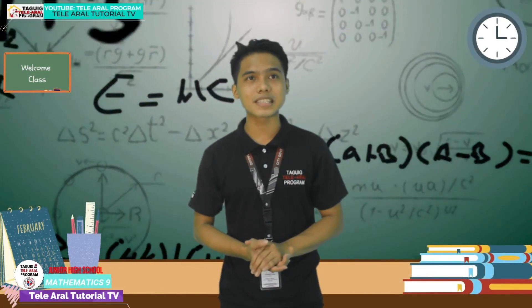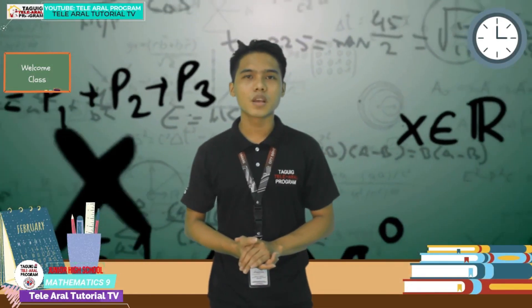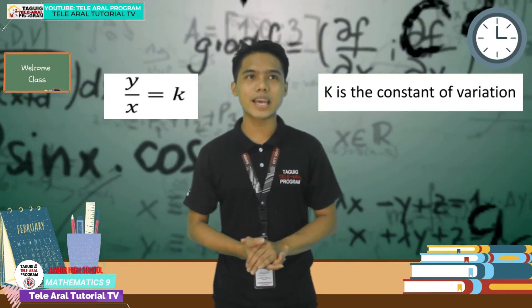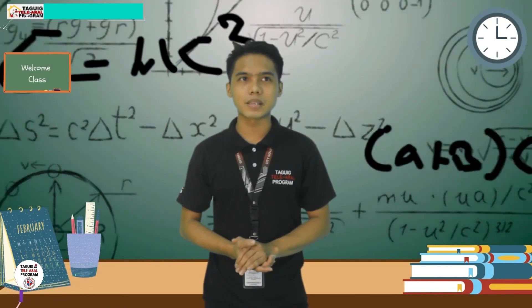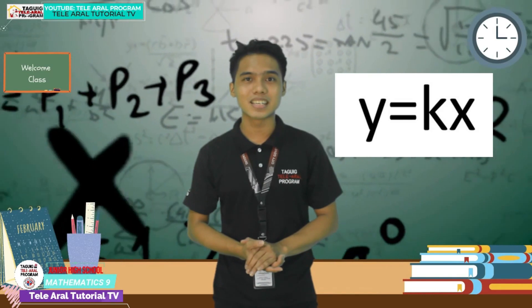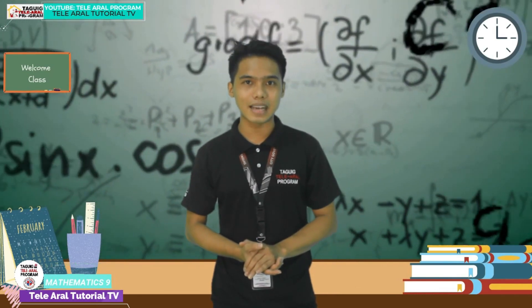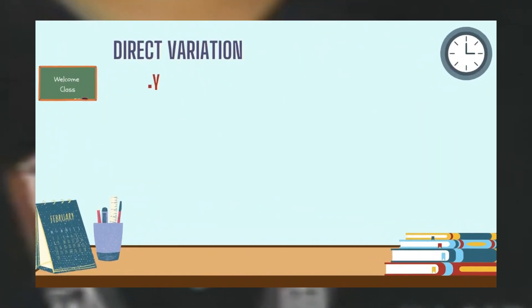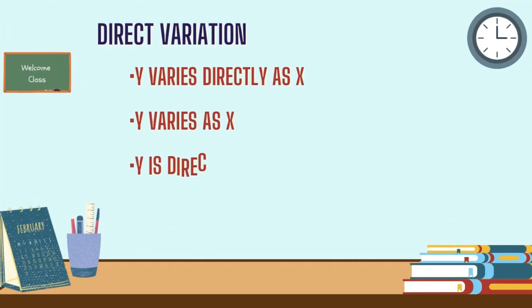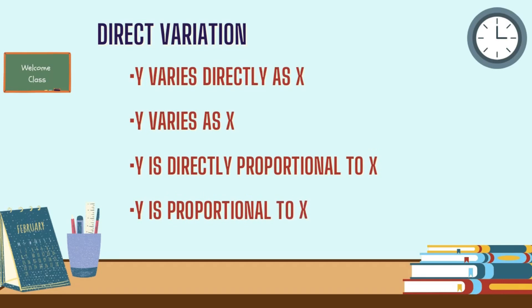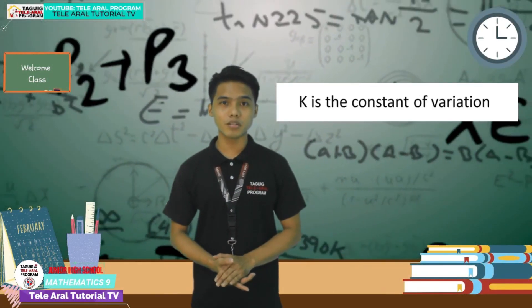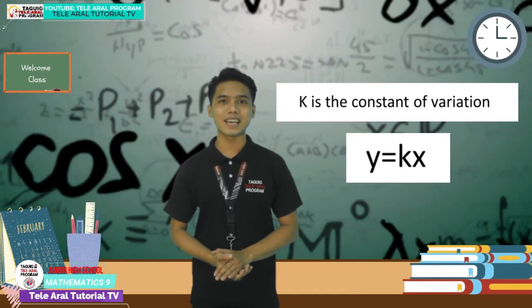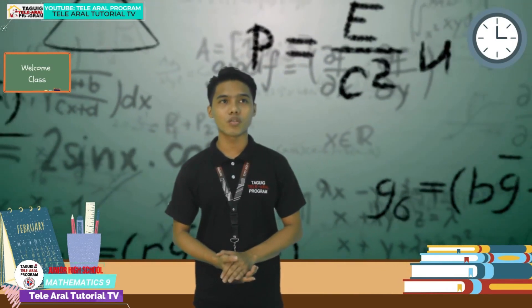Direct variation is a linear function that can be written in the form y over x equals k, where k is the constant of variation and k is not equal to zero. The equation can be simplified as y equals kx. And y equals kx may be read as: y varies directly proportional to x, y is directly proportional to x, or y is proportional to x. K is the constant of variation in y equals kx that relates the two quantities or variables.